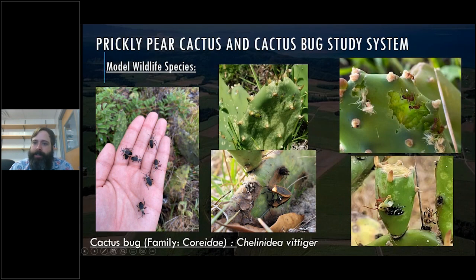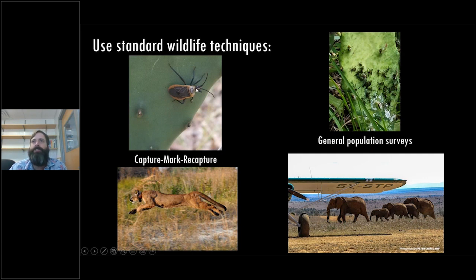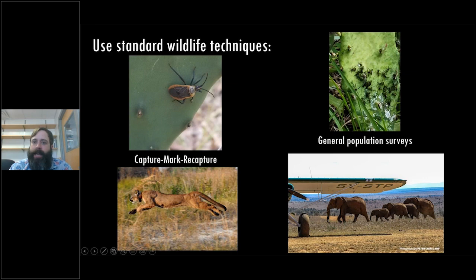There's also a nice group of competitors — harvesting ants taking some of the cactus — and a suite of predators, including a jumping spider taking a newly molted adult. We can use standard wildlife techniques on the species such as capture-mark-recapture: we glue three-letter tags on the pronotums, follow individuals across their lifespan, look at how they move, estimate detection probability, and estimate survival. We can also use general population surveys — analogous to aerial surveys of elephants — by going to the cactus and counting the number of individuals.